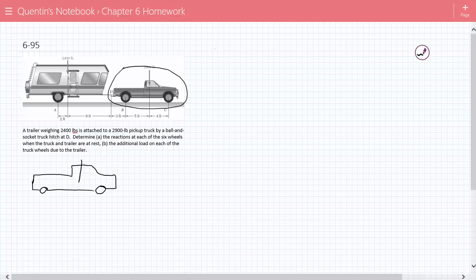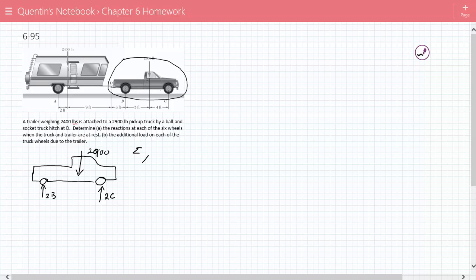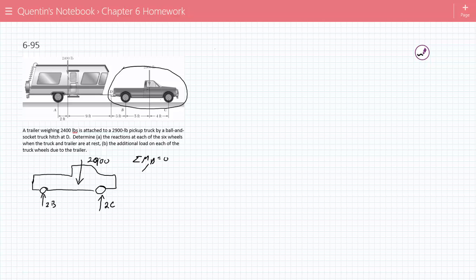So we have this. Here's our little free-body diagram. My awesome drawing skills of a truck. We have 2,900 pounds going down there. Here I'm going to put 2C and here I'm going to put 2B just because there's two wheels at each point. I'm going to say the sum of the moments at B is equal to zero.